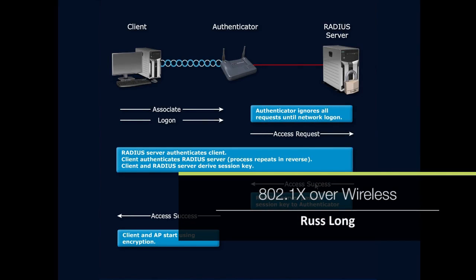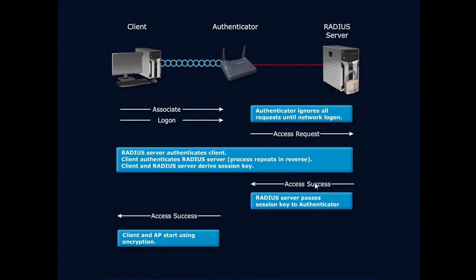We talked about the supplicant, the authenticator, and the authentication server — but what does this look like in a wireless environment? The client, which is the supplicant, attempts to associate or log on to the authenticator. The authenticator then takes that request, wraps it up in an 802.1x frame, encapsulates it, and sends it along to our RADIUS server.